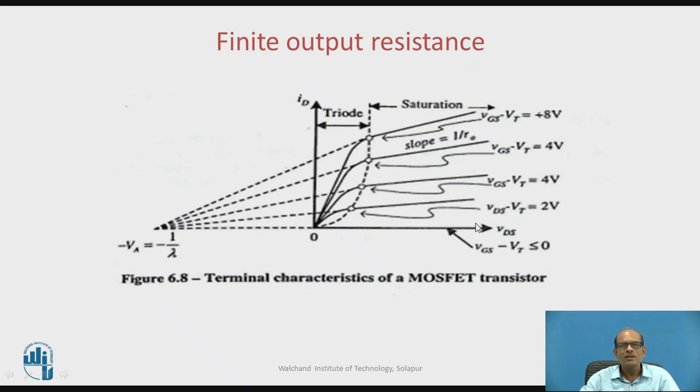The figure shows the V-I characteristics for the N-channel E-MOSFET, ID versus VDS for different values of VGS. So here VDS minus VT 2 volts, then VDS minus VT 4 volts, 4 volts, 8 volts. Now if you extend these characteristics in the form of dotted lines, all the dotted lines, there are four dotted lines for the four characteristics, and they will meet at one point...